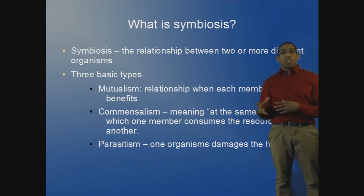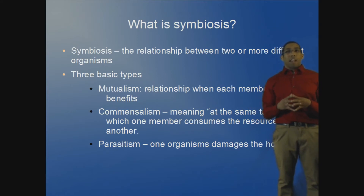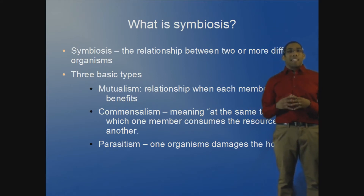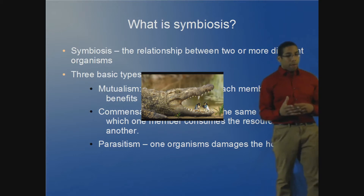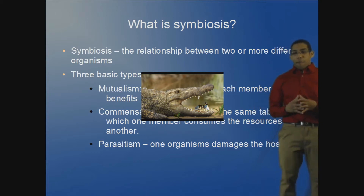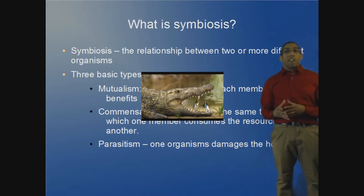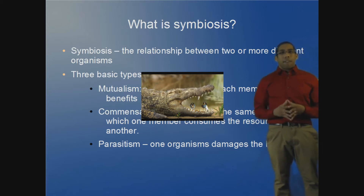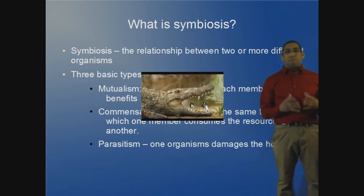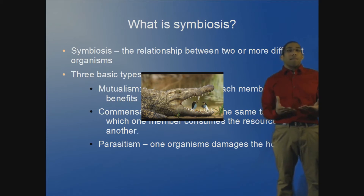Besides mutualism, the next category is commensalism, which means eating at the same table. An example of that would be the alligator and the plover bird. The plover bird eats from the alligator, but the alligator doesn't get any direct benefit — it's essentially just providing the bird with a table to eat from.